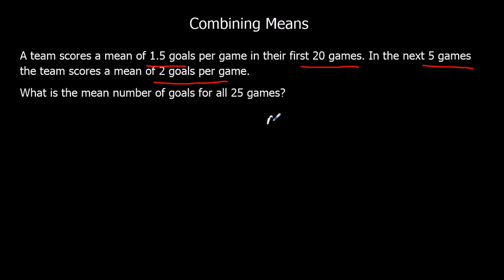So the mean is going to be total one plus total two over 25. So what are the total one and total twos? So total one, the first 20 games, the mean was 1.5 goals per game. So 20 times 1.5, and that is 30 goals. So 30 goals in the first 20 games.